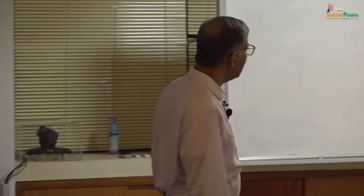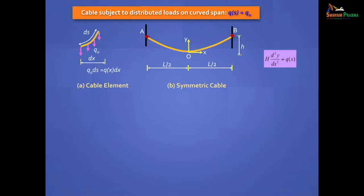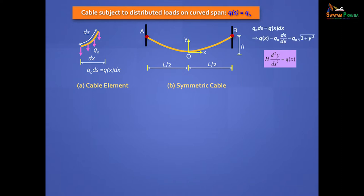This is a case where the cable is subject to self-weight or uniformly distributed loads along the curved span. So Q0 is in this direction, and if you take an element dx, then Q0 ds = Q(x) dx. And Q(x) is changing. So for the same cable profile with self-weight, you have to go back to the fundamental equation — we are not assuming any parabola or anything. If you take this equation, you will get an expression for Q(x) which is Q0 times the square root of 1 plus y'².